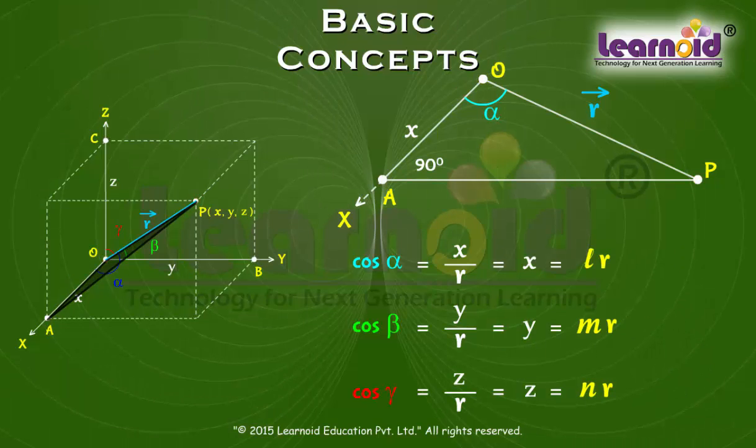LR, MR and NR are called as direction ratios of vector R.